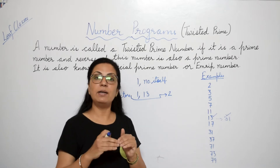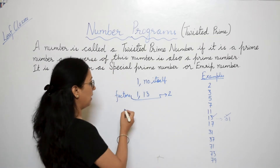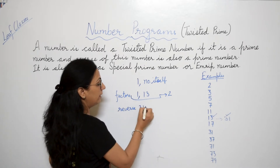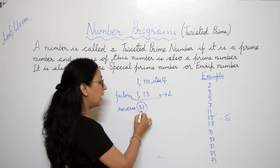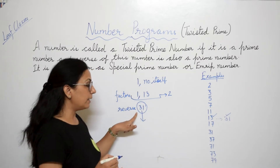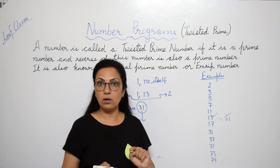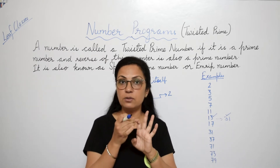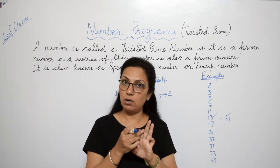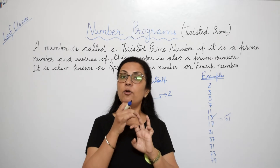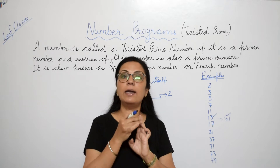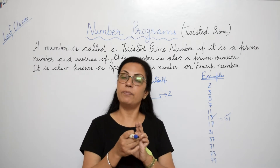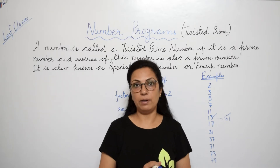First, we check whether it is a prime number or not by calculating the number of factors. If it comes to 2, it is a prime number. When it is a prime number, we find the reverse of the number — for example, reverse of 13 is 31 — and then we check whether this reverse is also a prime number. So there are three steps: check factors of the number, find its reverse, then check factors of the reverse.